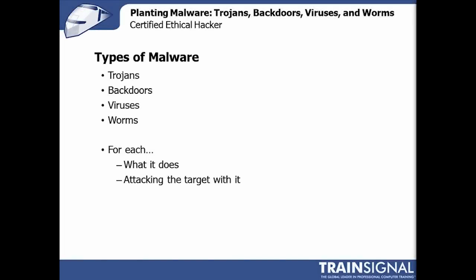Both for purposes of knowing what you can be asked about on a Certified Ethical Hacker exam, and for understanding how to target a malware attack in a practical real-world situation, there are four types of malware that I'll break down over the next several slides with examples of how they work: trojans, backdoors, viruses, and worms.